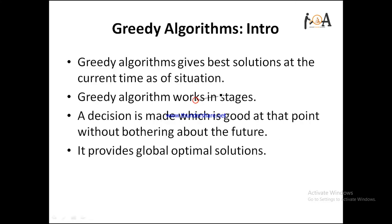Basically, a greedy algorithm gives the best solution at the current time or situation. For example, in chess you have to remember future goals and take steps accordingly, but in cricket you handle the present situation. Similarly, the greedy algorithm depends on the present condition — it makes decisions locally based on the current state.